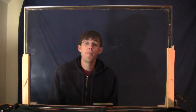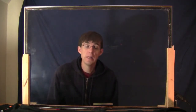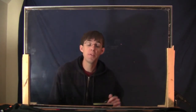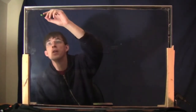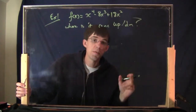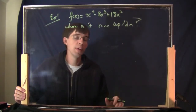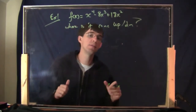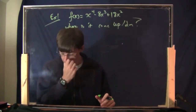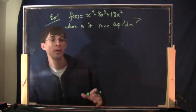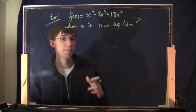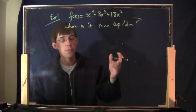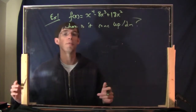Last time we talked about looking at a graph and saying where is it concave up or concave down. I'm going to start off by doing the same thing but not looking at the graph, looking at an equation. Can you do it if all I give you is an equation? You tell me where is it concave up or down. This is just like the questions where is it increasing or decreasing, but using the second derivative instead of the first.